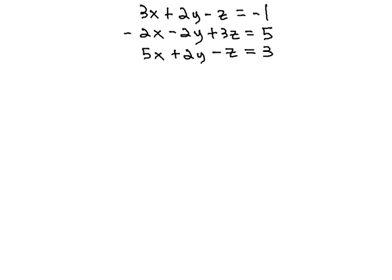In this video, we're going to look at solving a system of three equations with three variables. Here we have 3x plus 2y minus z equals negative 1, negative 2x minus 2y plus 3z equals 5, and 5x plus 2y minus z equals 3.